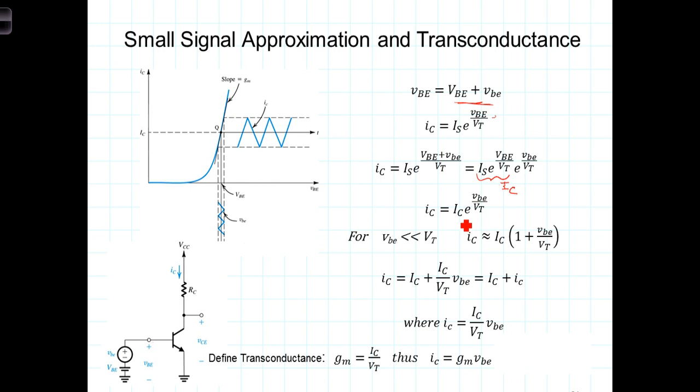So replacing that with I_C, the bias quantity, the current that's flowing through the transistor with no signal applied, just there resting, I_C times e^(v_be/V_T), where that's the lowercase, that's the small signal, divided by V_T. So the total current then is equal to the bias current times this e^(v_be/V_T).